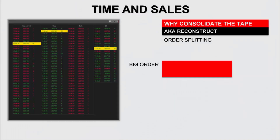What we need to know, and we know this happens, is that split block pricing and order splitting occurs. Split block pricing can then lead to the common weighted average price — VWAPs and TWAPs.